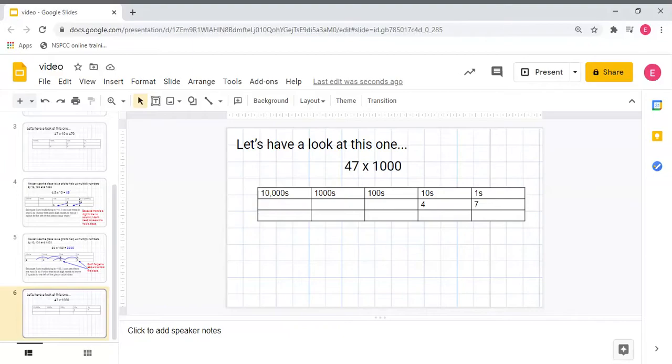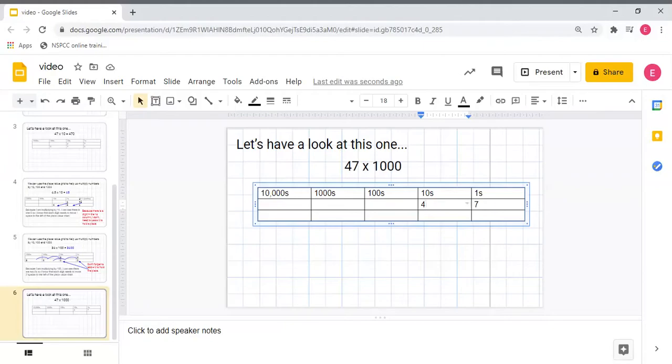So I'm going to take my four tens first, and I'm going to jump it three places to the left: into the hundreds, into the thousands, and then into the tens of thousands.